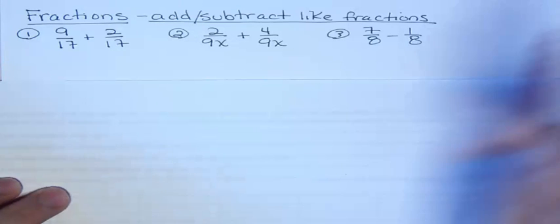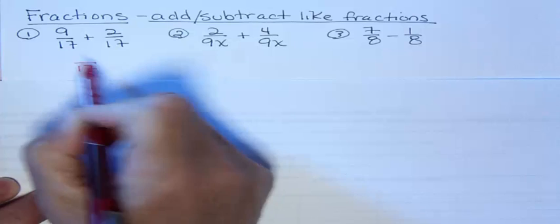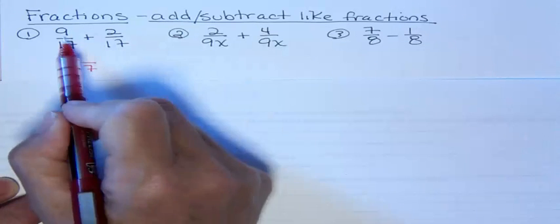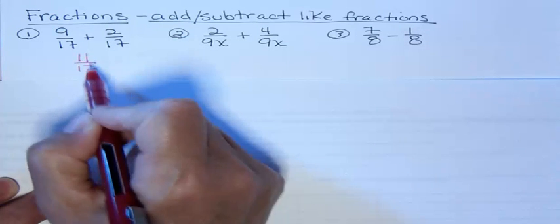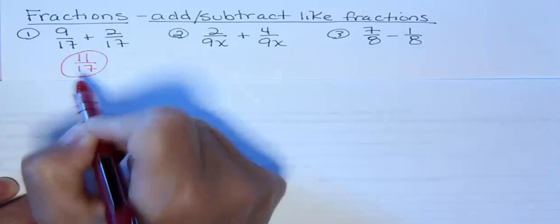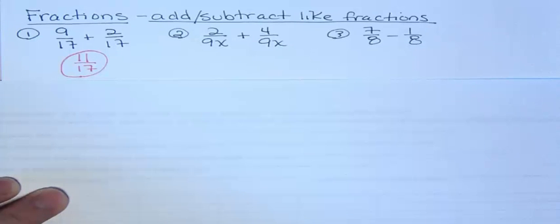So in the first one, I'm going to have 17ths because that's the common denominator, and I just say 9 plus 2 is 11. Always I want to reduce to lowest terms if I can, but there's no common factor, so I don't need to worry about it.